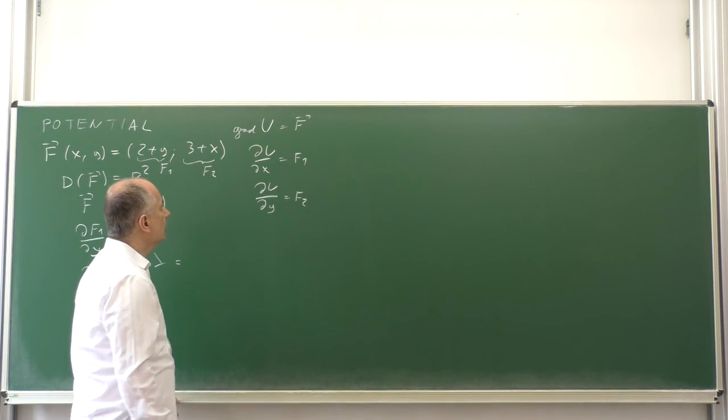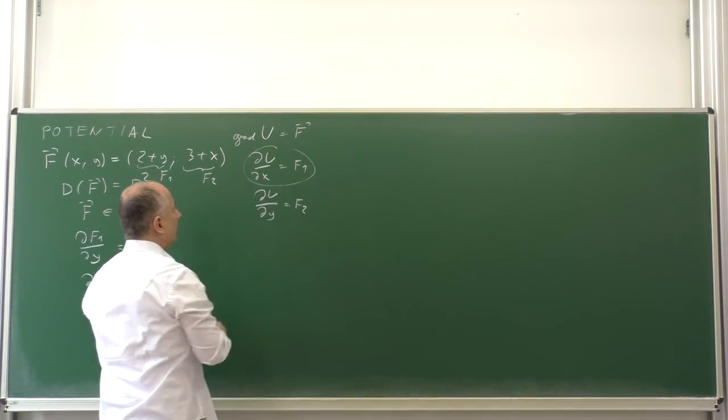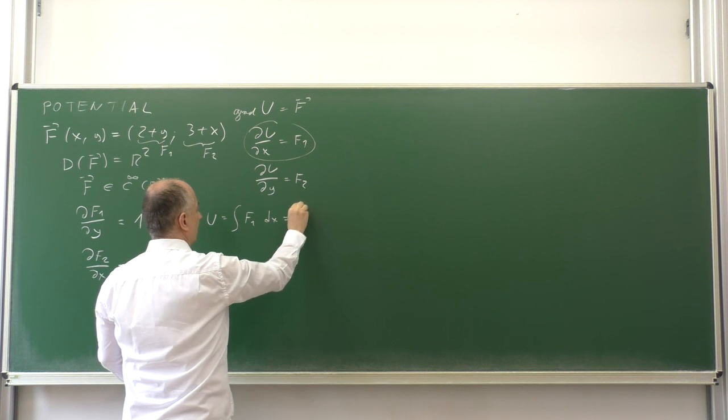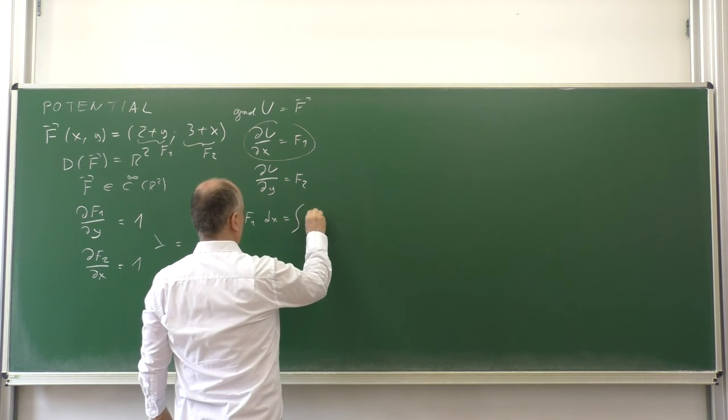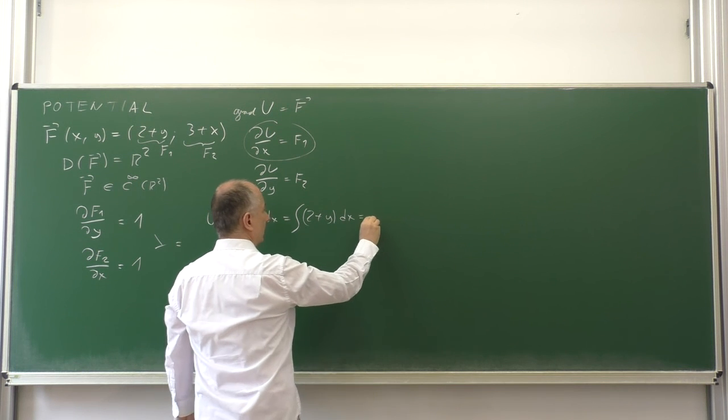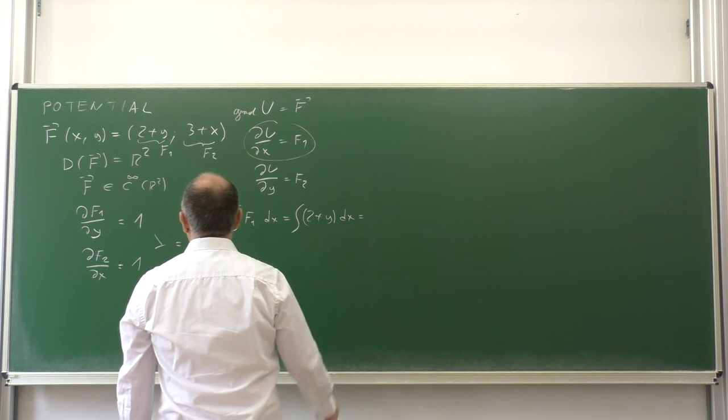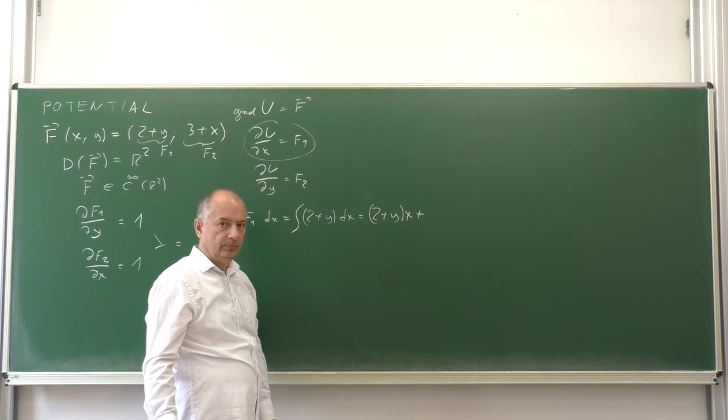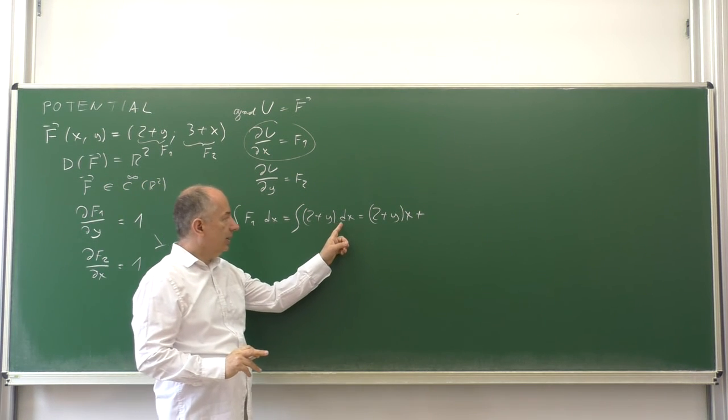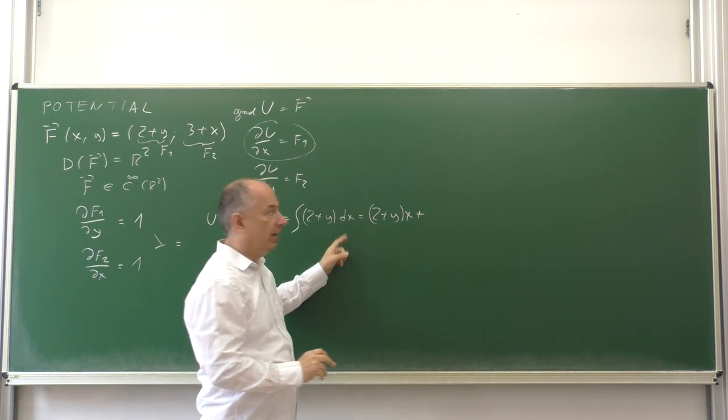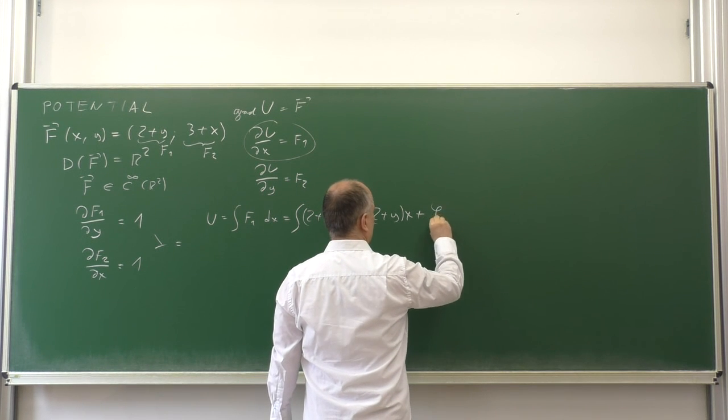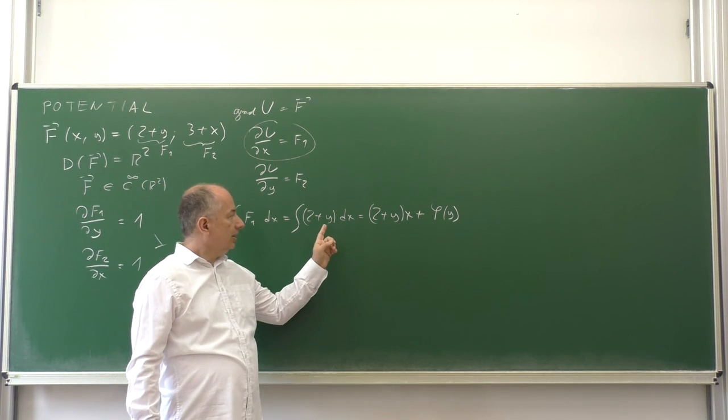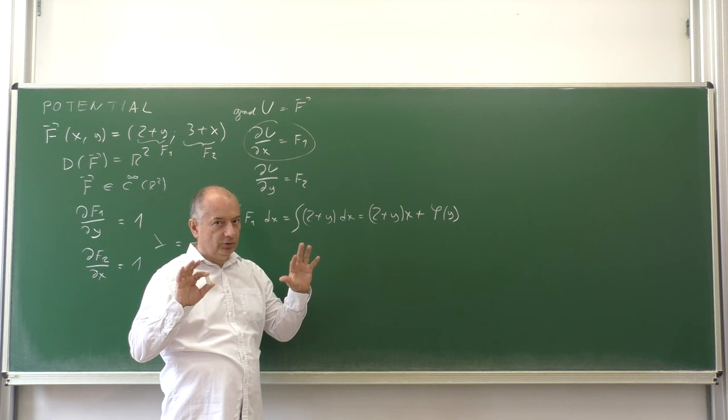First we can look at this as a system of two partial differential equations for the unknown function u of x and y. Considering the first equation we integrate: u equals integral of F1 dx. In this case F1 is 2 plus y dx, which is 2x plus xy plus a constant. A constant in the sense that it does not depend on x but may depend on y. Let's call this constant φ of y.